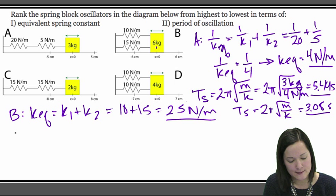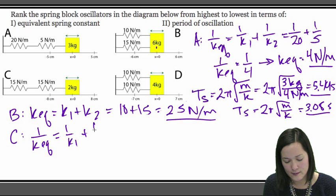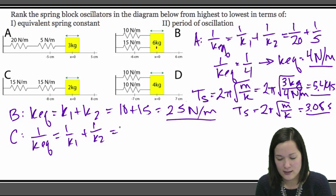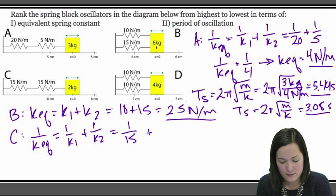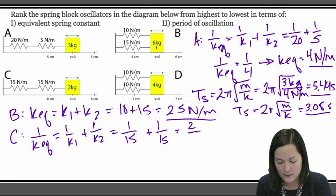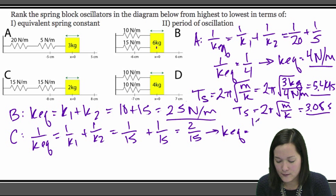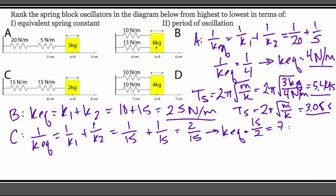For spring system C, we have springs in series again. So 1 over k_eq equals 1 over k1 plus 1 over k2, which gives us 1 over 15 plus 1 over 15, or 2 over 15. So k_eq equals 15 over 2, or 7.5 newtons per meter. The period is Ts equals 2π times the square root of m over k, which gives 3.24 seconds.